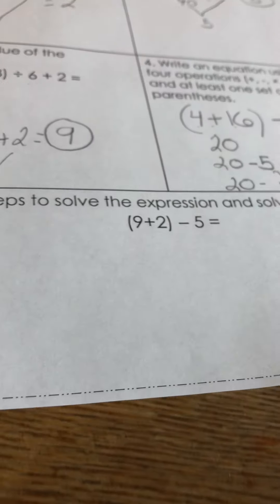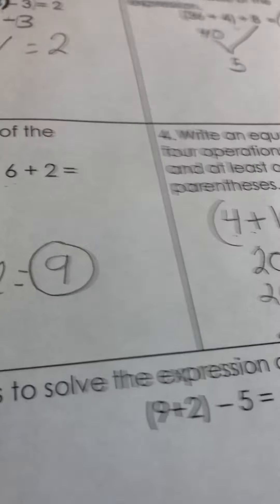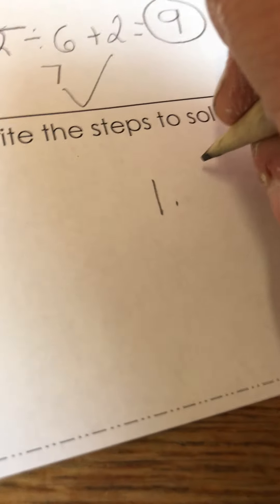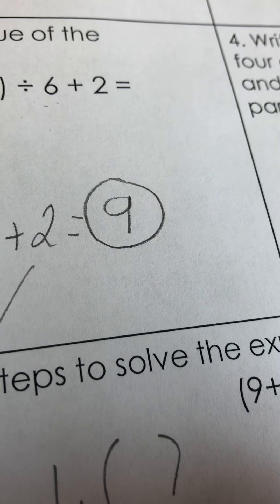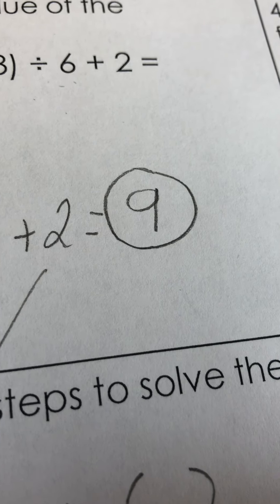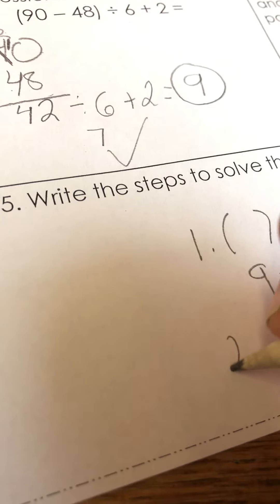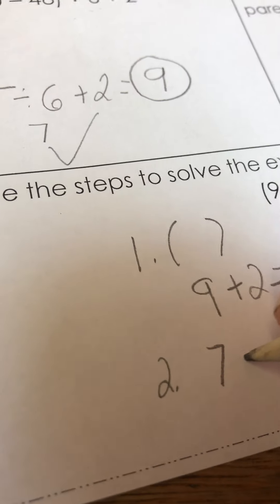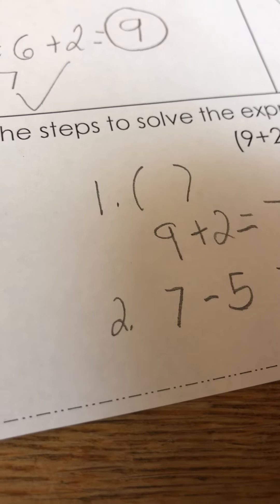Okay, the last one. Write the steps to solve the expression. So the first thing we're going to do is the parentheses. So 9 plus 2 equals 11. And then the second step, we have 11 minus 5 which equals 6.